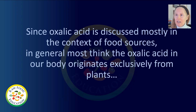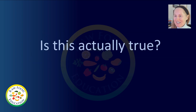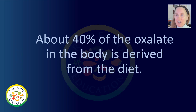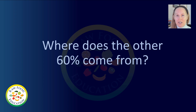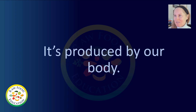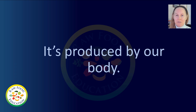Since oxalic acid is discussed mostly in the context of food sources, I think most people assume that oxalic acid in our body originates exclusively from plants. But is this actually true? As it turns out, about 40% of the oxalate in our body is derived from our diet — but what about the other 60%? It's actually produced by our body, which may come as a surprise, since many health influencers talk about eliminating plant foods to avoid oxalic acid.